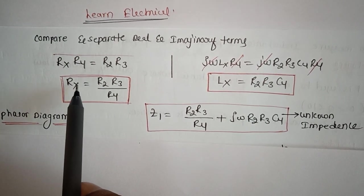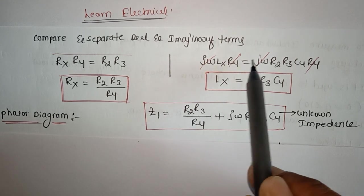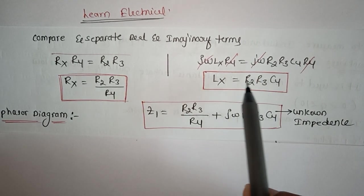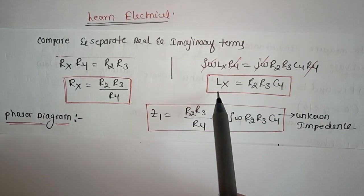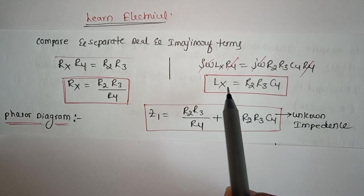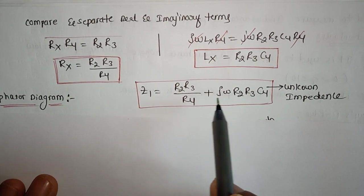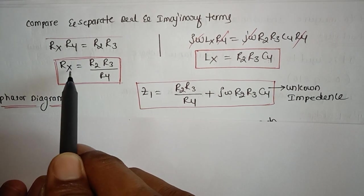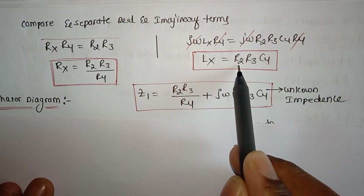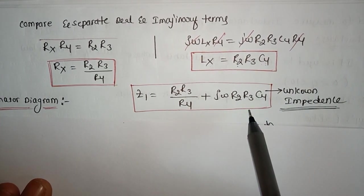By equating imaginary terms: Lx = R2·R3·C4. This is the unknown inductance expressed in terms of capacitance, which is why this is called Maxwell's Inductance-Capacitance Bridge. The total unknown impedance is: Zx = (R2·R3/R4) + jω·R2·R3·C4.